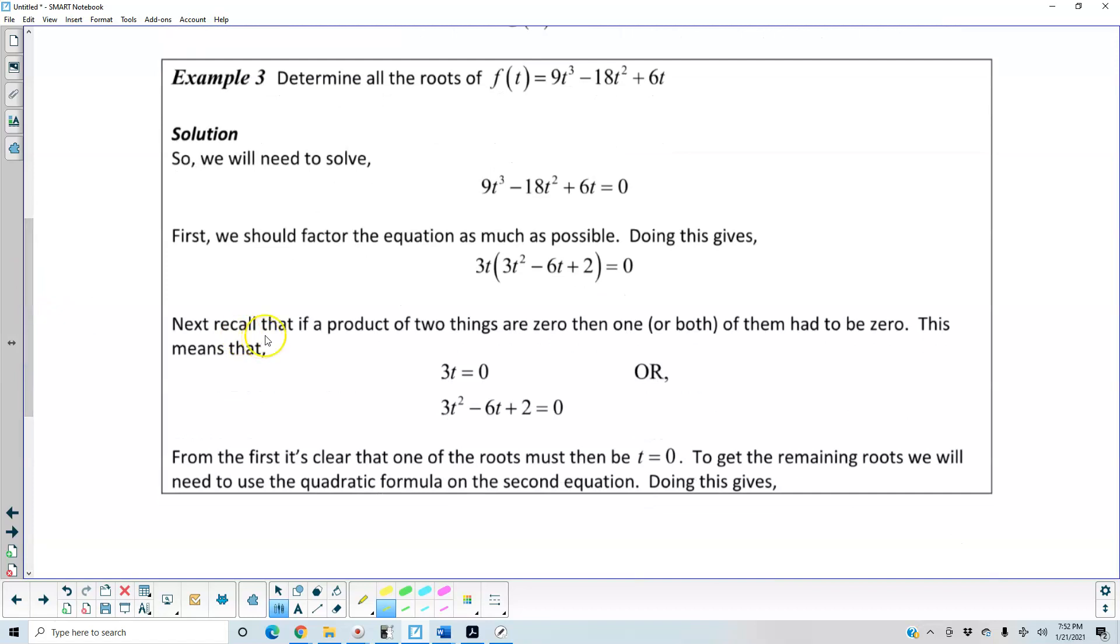Next, recall that if a product of two things are zero, then one or both of them had to be zero. This means that 3t = 0 or 3t² - 6t + 2 = 0. Now if we look at the first equation here, it's clear that one of the roots must then be t = 0.